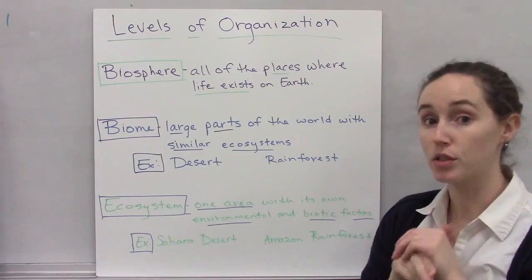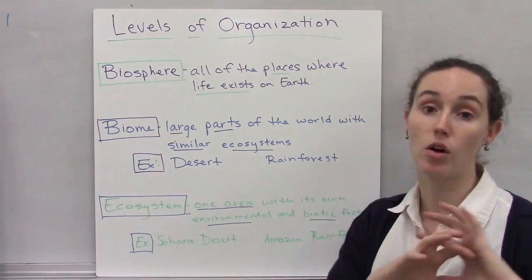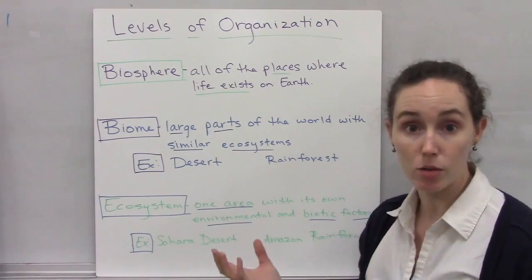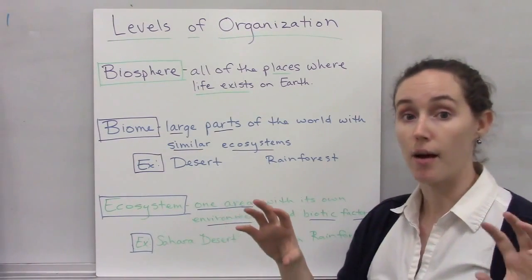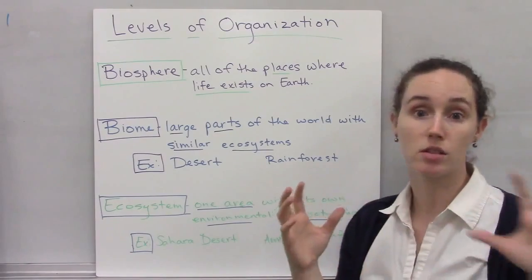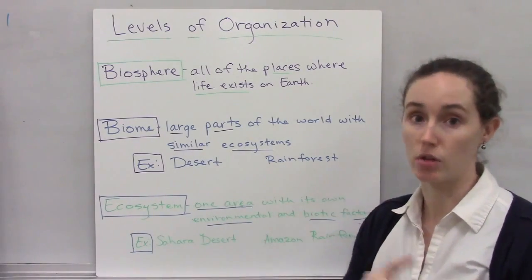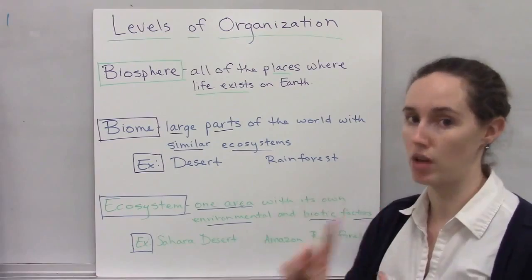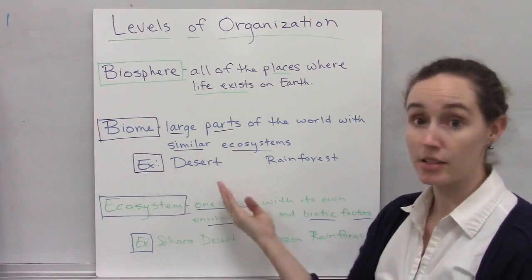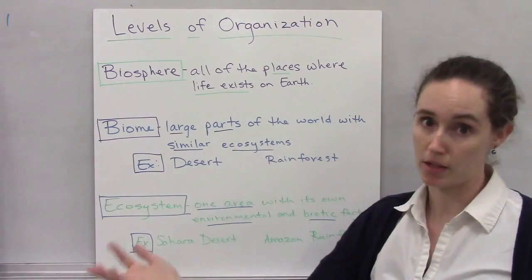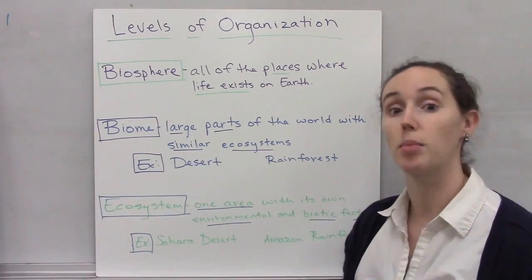The biosphere is broken down into big chunks called biomes. Biomes are large areas with many ecosystems that have similar plants and animals, adapted to that same similar environment. My examples here are the desert and the rainforest — both are biomes.